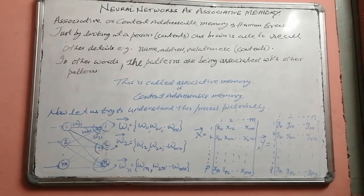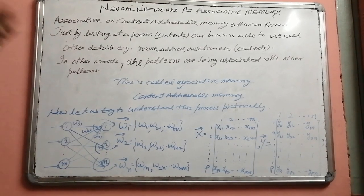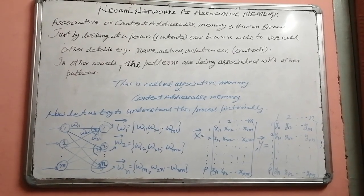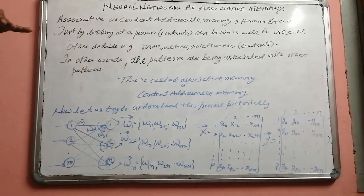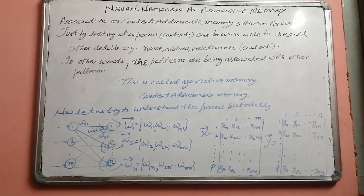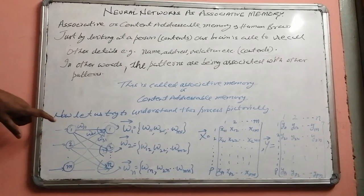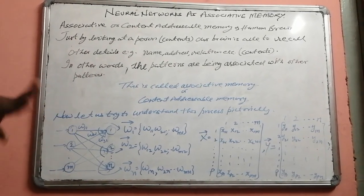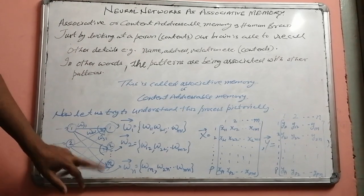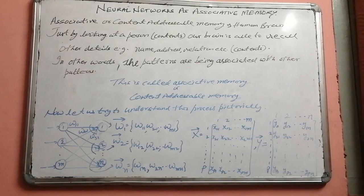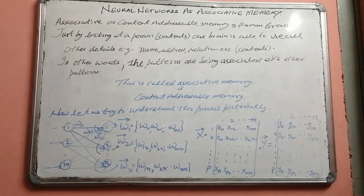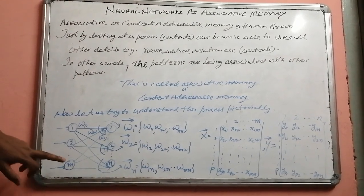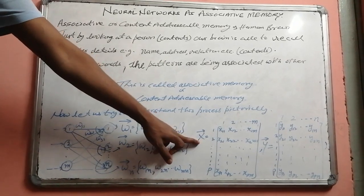These are self-descriptive using the subscript and superscript convention. Now suppose there are P patterns we want to learn — we want to associate P number of patterns. Each of the P patterns contains M number of features, and the expected output stored corresponding to each pattern contains N number of features. So we want to store an M-featured vector with respect to an N-featured vector.